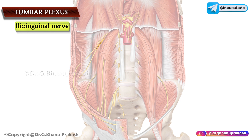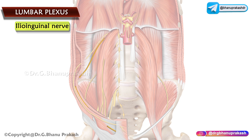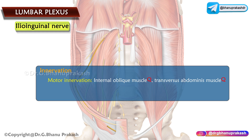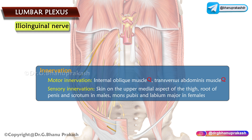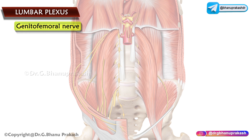The ilioinguinal nerve follows a similar course to the iliohypogastric nerve but at a slightly lower level. It pierces the transversus abdominis close to the anterior part of the iliac crest. Motor innervation is mainly to the internal oblique and transversus abdominis muscles. Sensory innervation is to the skin on the upper medial aspect of the thigh, root of the penis and scrotum in males, and mons pubis and labia majora in females.